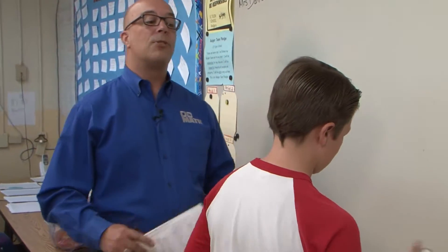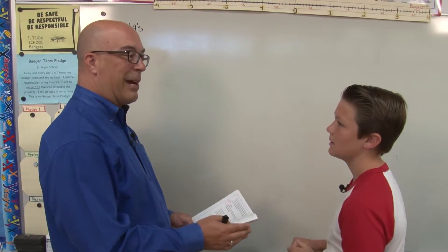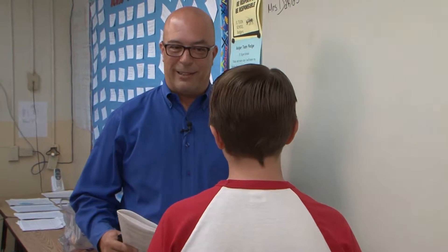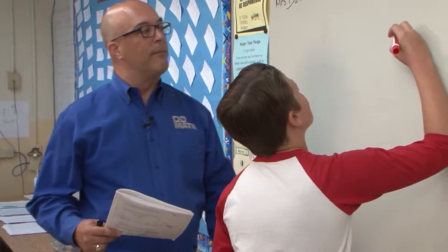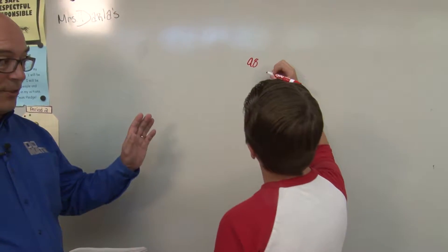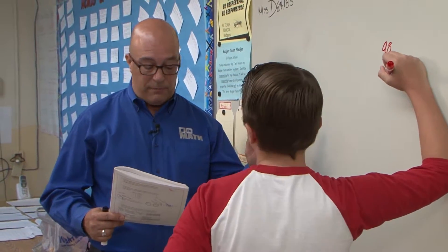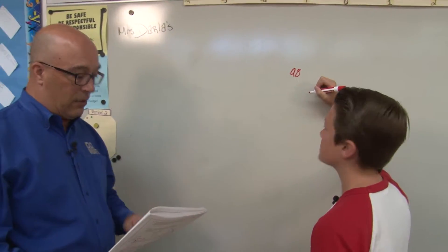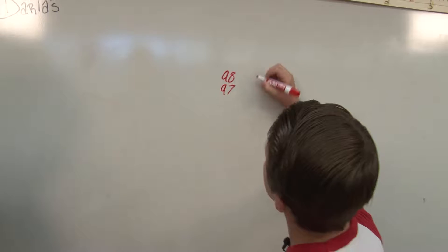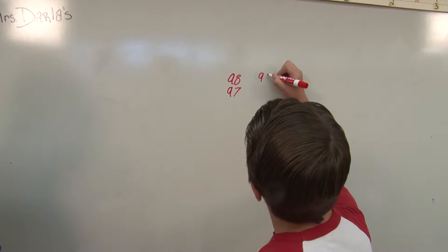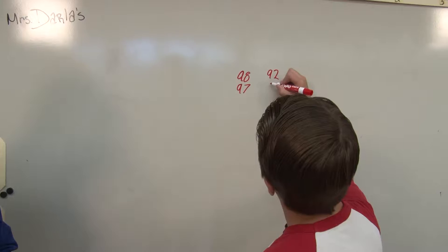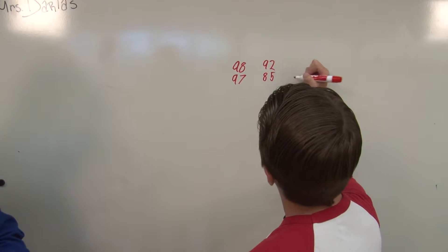Grab a marker. I'm going to read off some scores, and I'm sure these are pretty comparable to the scores you get on your math tests. You're pretty good at math? Yeah. All right, here we go. Let's go 98, so go ahead and put 98 up there, and we're going to add these numbers, okay? You can write them however you want to, horizontally or vertically, to do this. 97, 92, 85, and 93.